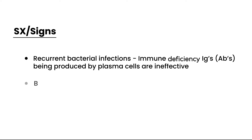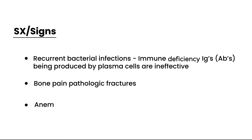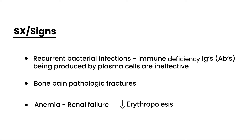The next symptom involves bone pain, simply because of fractures. All of those fractures occur because the malignant plasma cells are activating osteoclasts, which are essentially resorbing the bone. Anemia is also a sign, and it happens because of renal failure — the calcium and light chains deposit in the kidney, causing renal failure, which results in decreased erythropoiesis since erythropoietin is produced by the kidney and helps build red blood cells.